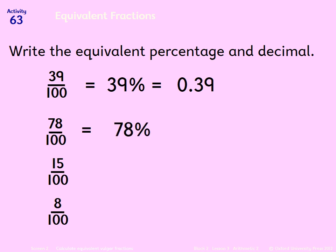78 over 100 is 78% and 0.78. 15 over 100 would be 15% and 0.15, nice and simple.